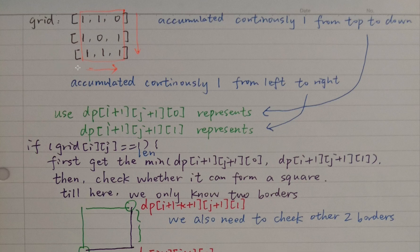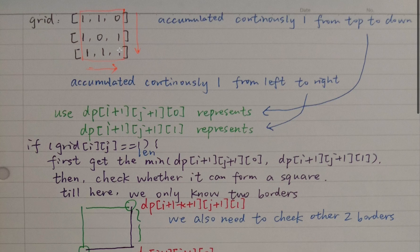For the left-to-right direction, we save the accumulated continuous ones in dp[i+1][j+1][1]. So in this case dp[3][3][0] is 2 because from top to down there are two accumulated ones. And dp[3][3][1] is 3 because there are three continuous ones from left to right.